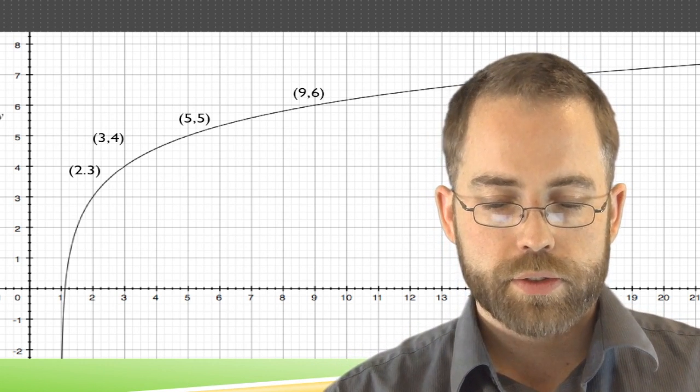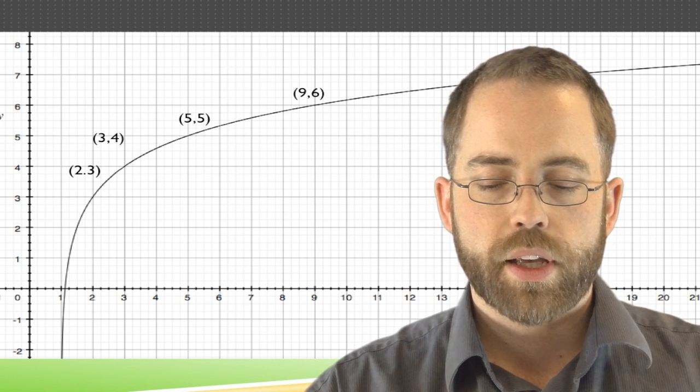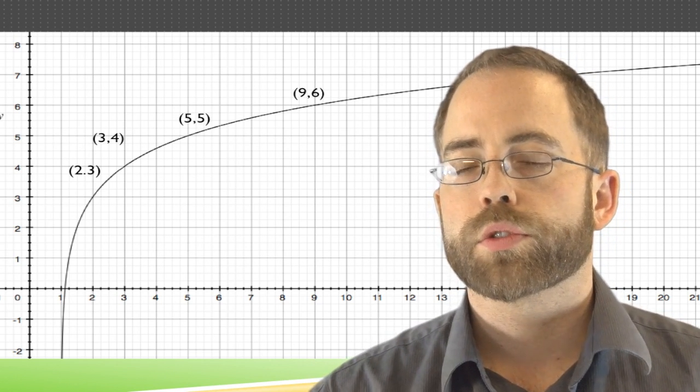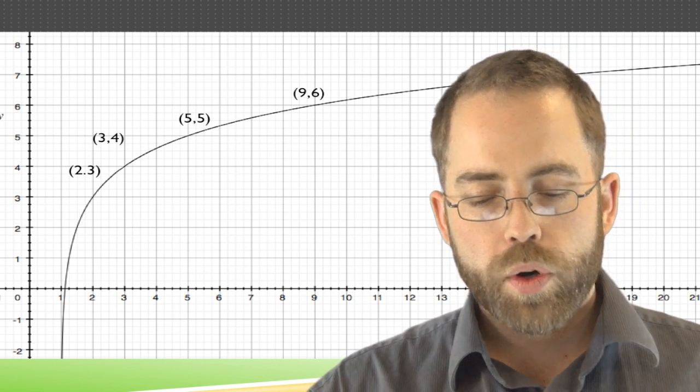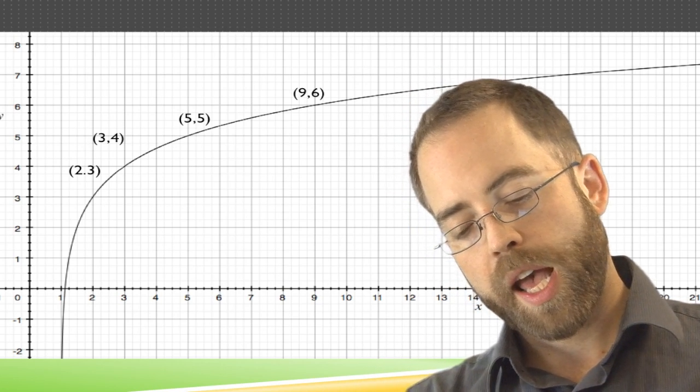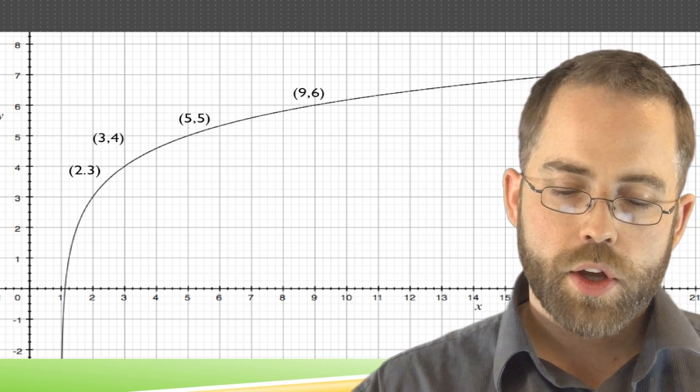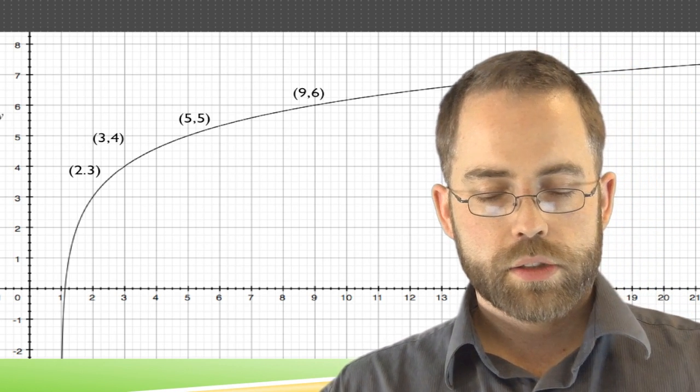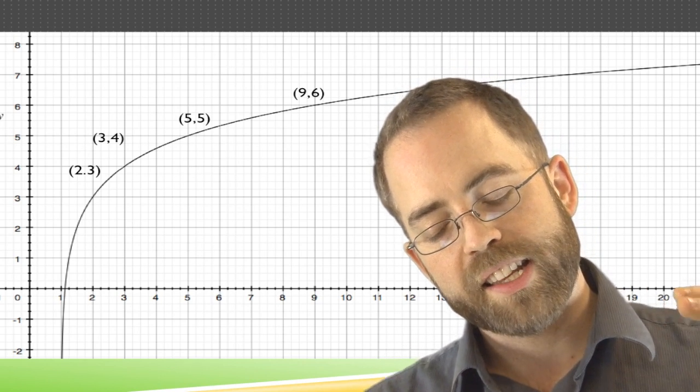The equation for this is going to be a bit trickier. We've got to say, what is the growth rate? Trying to figure out how quickly this equation is growing. Look at this, tilt your head and look at it sideways. From 2, 3 to 3, 4, there it went up 1, and it went right 1. In the next increment, 3, 4 to 5, 5, it went 2.